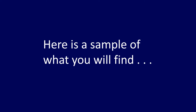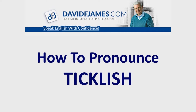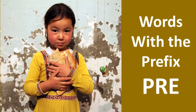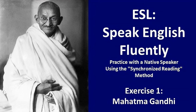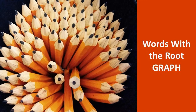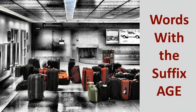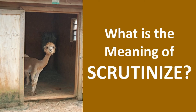Here's a sample of what you'll find. What's Silly Money? How to Pronounce Ticklish. The Origin and Meaning of Comb. Words with the Prefix Pre. How to Use an Asterisk. Speak English Fluently using the Synchronised Reading Method. How to Pronounce Niche. Words with the Root Graph. The Meaning and Definition of Appeal. Words with the Suffix Adge. What's the Difference between Uninterested and Disinterested? What's the Meaning of Scrutinise?